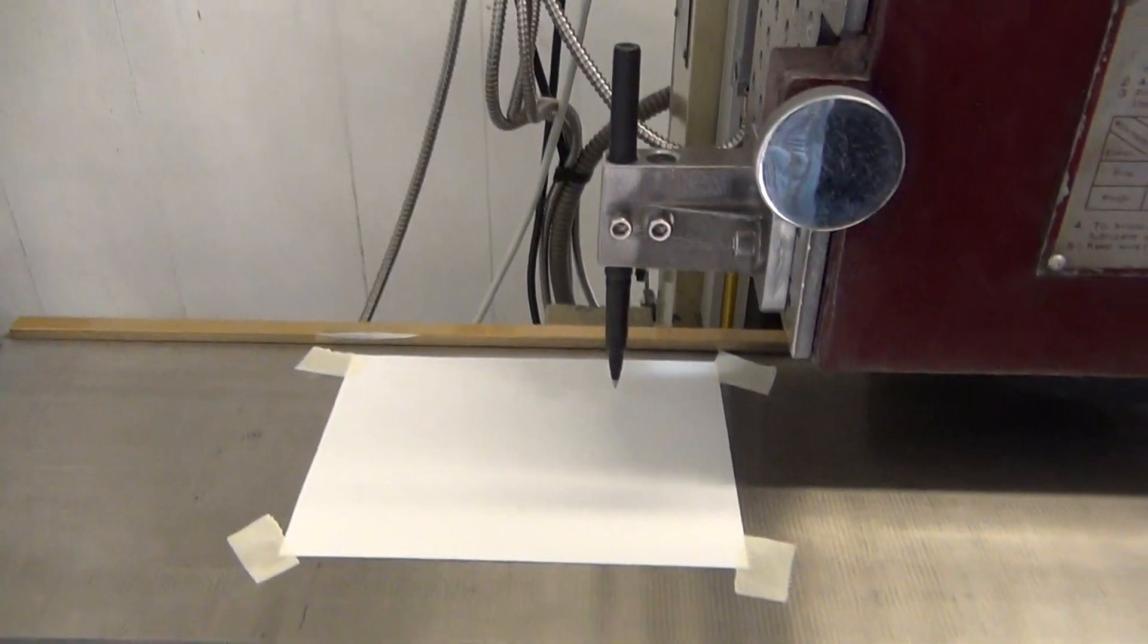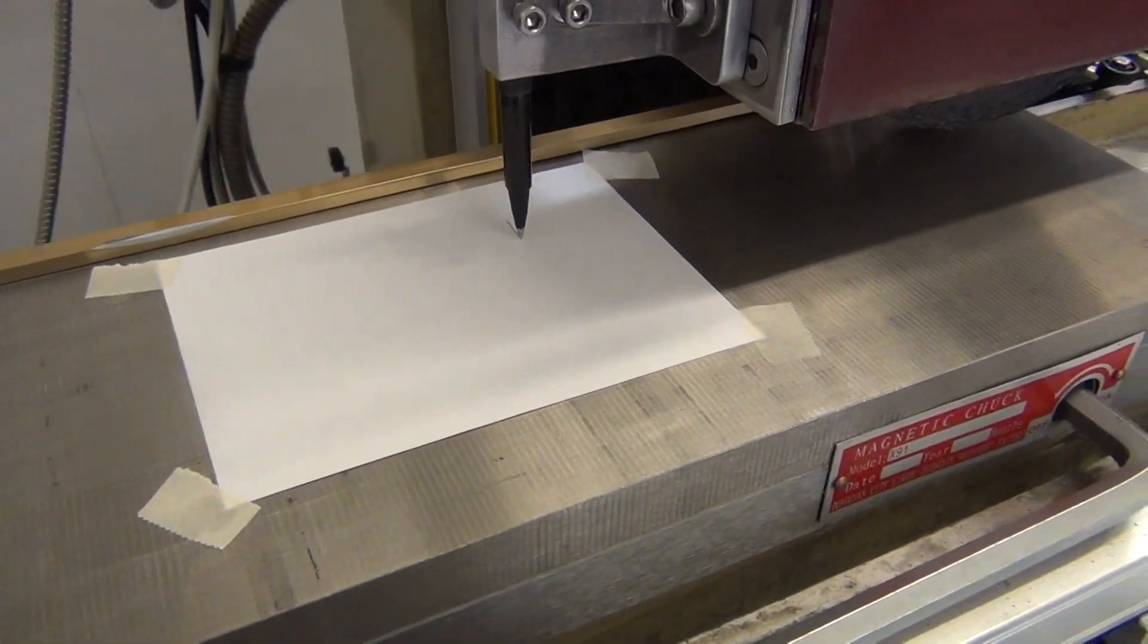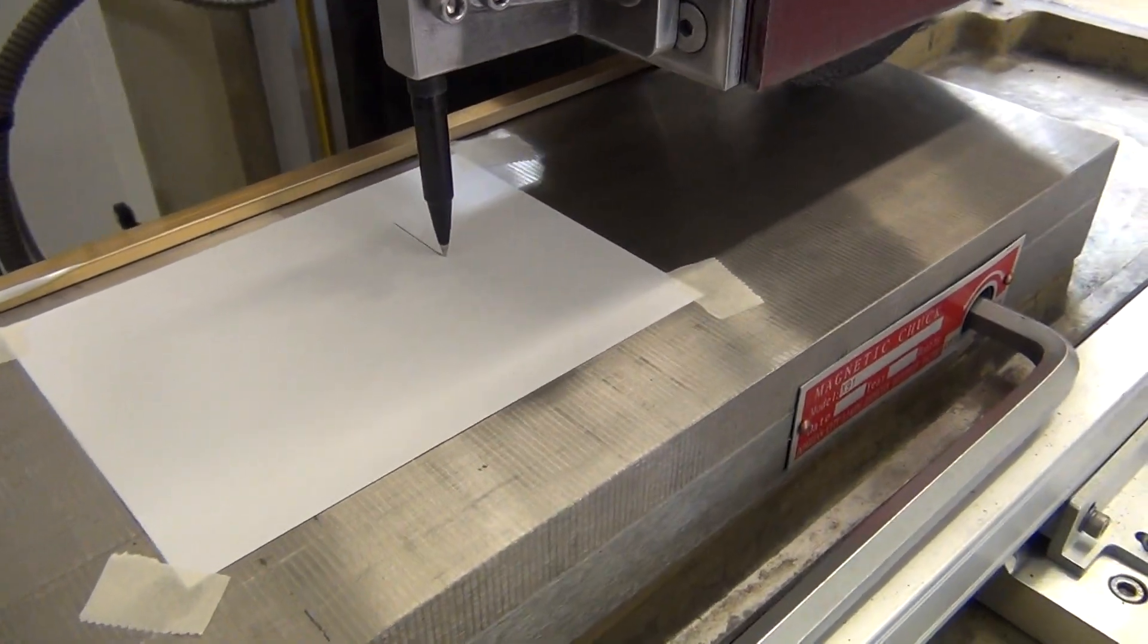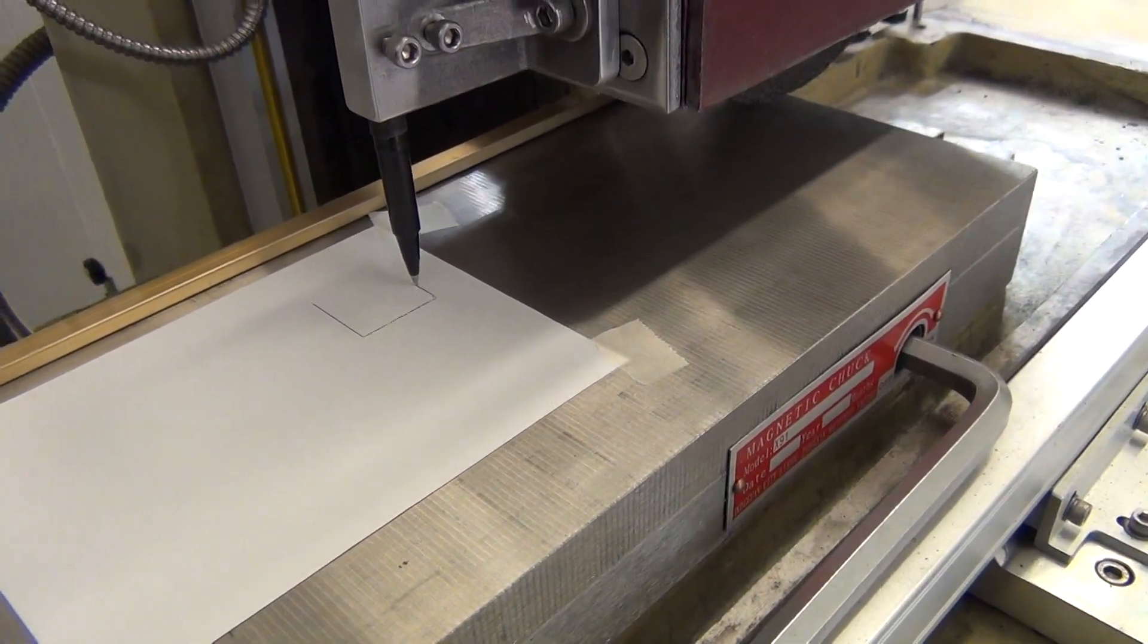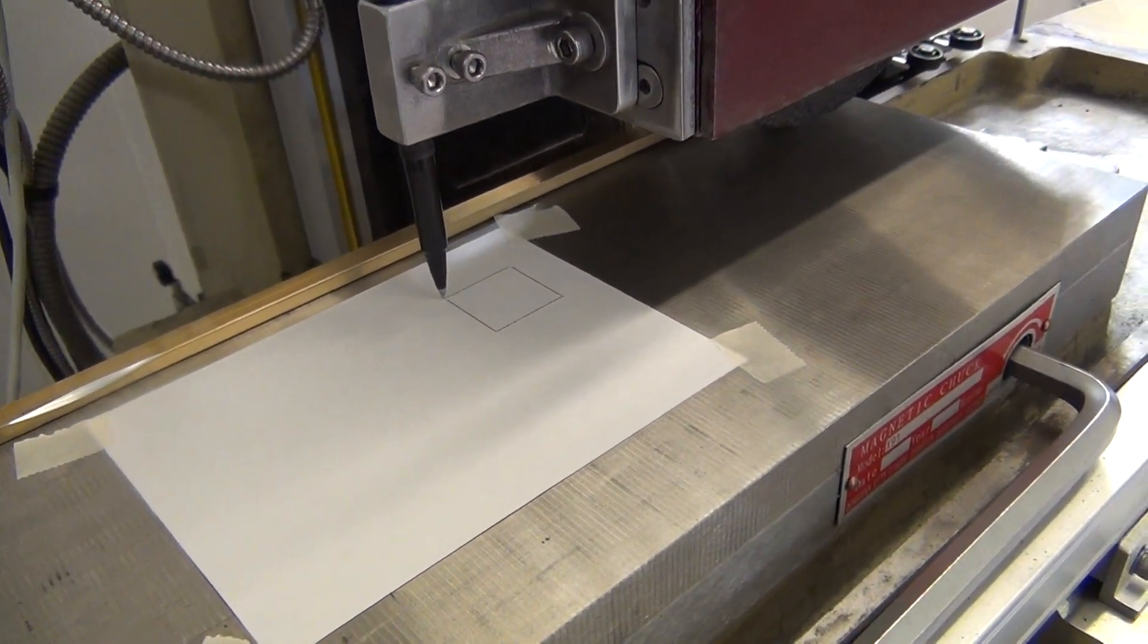I'm going to go ahead and hit start. You'll see the pen come down. It's going to do some linear motion. It's going to draw a one-inch square box. Some G01s, you know, G01x and G01y.